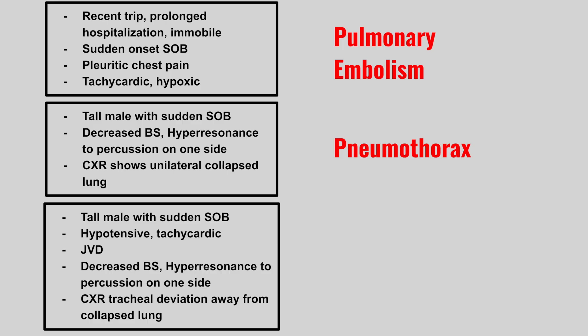Now we have a tall male with sudden shortness of breath, hypotensive and tachycardic, JVD, decreased breath sounds, hyperresonance to percussion on one side, and chest x-ray with tracheal deviation away from the collapsed lung. This is a tension pneumothorax.